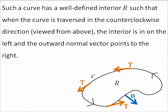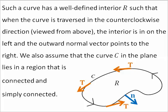Such a curve has a well-defined interior R, such that when the curve is traversed in the counterclockwise direction, the interior is on the left and the outward normal vector points to the right. We also assume that the curve in the plane lies in a region that is connected and simply connected.